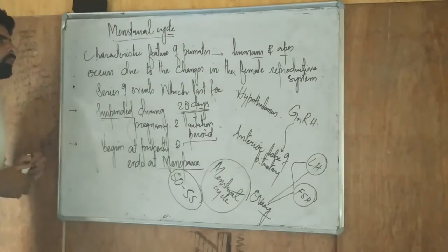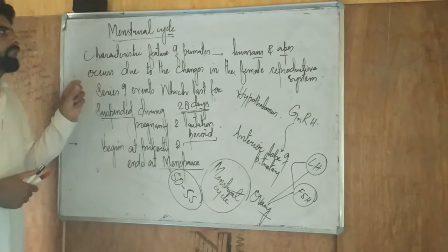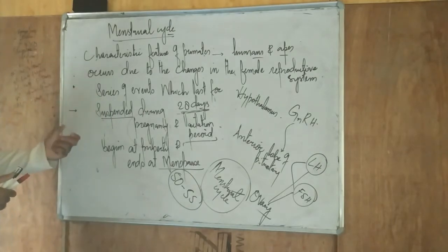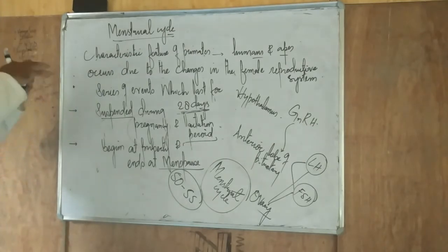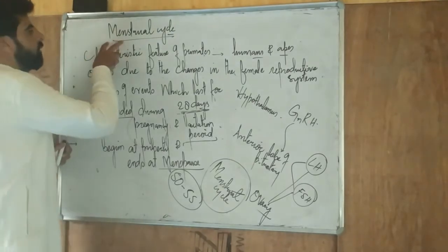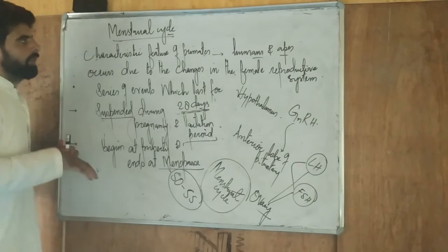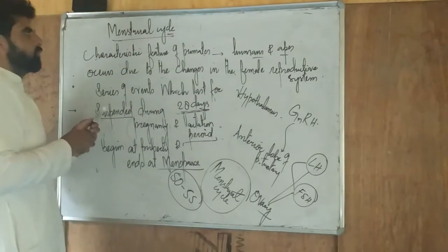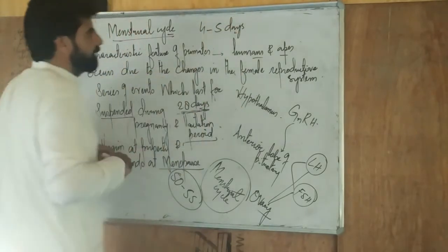During the menstrual cycle, the endometrium — the inner lining of the uterus — and the secondary oocyte which is transported into the uterus both get broken down or degenerated. They come out through the vagina in the form of blood. This menstrual cycle may be shorter or longer in certain cases, but on average it lasts four to five days.